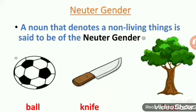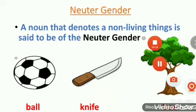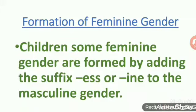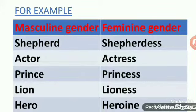I hope you are now familiar with the four types of gender. Now children, let us learn about the formation of feminine gender. Some feminine genders are formed by adding the suffix -ess or -ine to the masculine gender. For example, shepherd becomes shepherdess, actor becomes actress, prince becomes princess, lion becomes lioness, and hero becomes heroine.